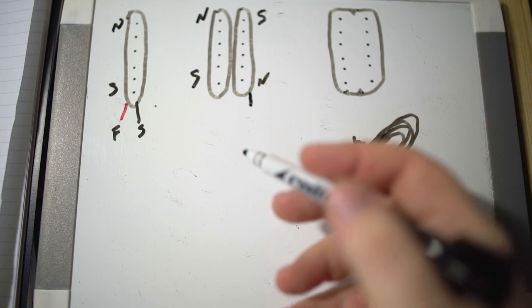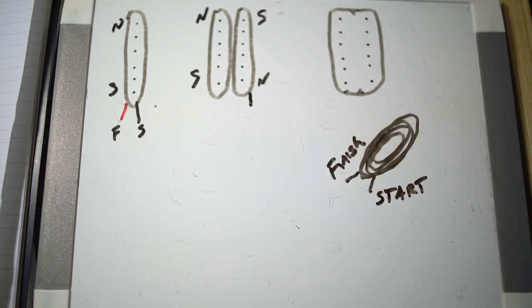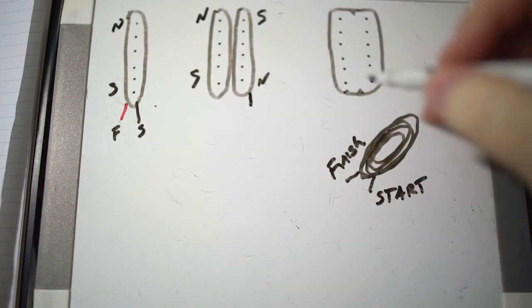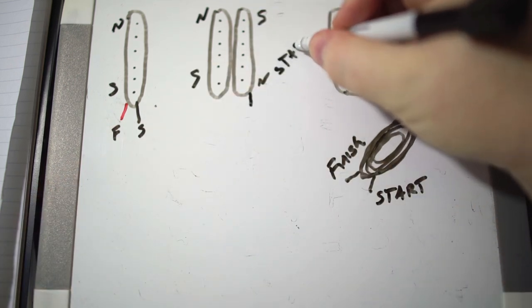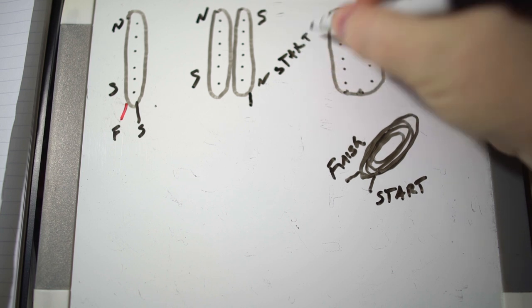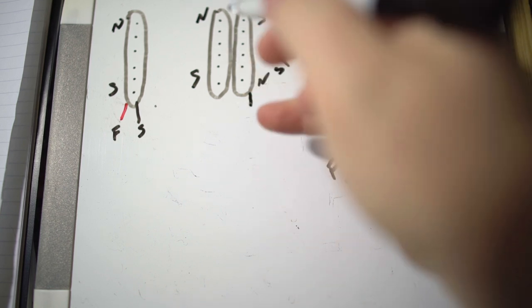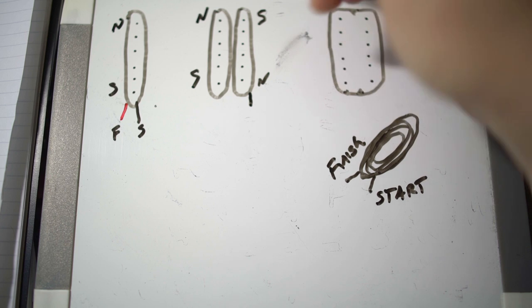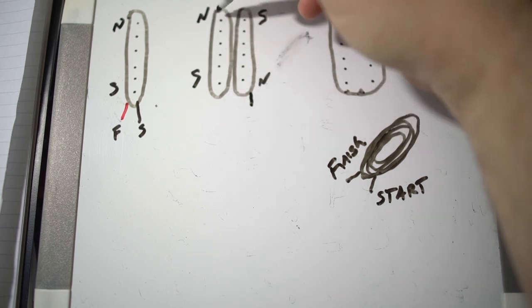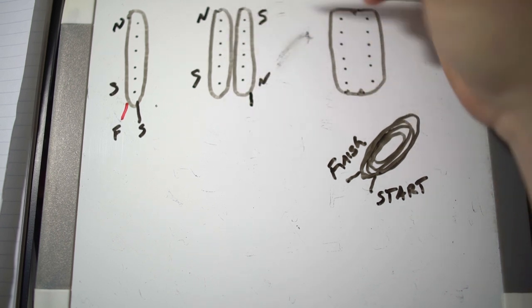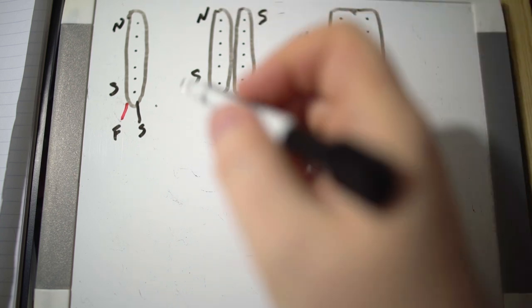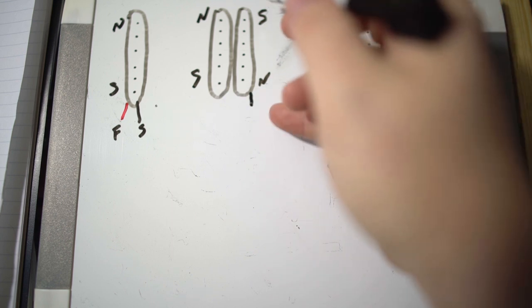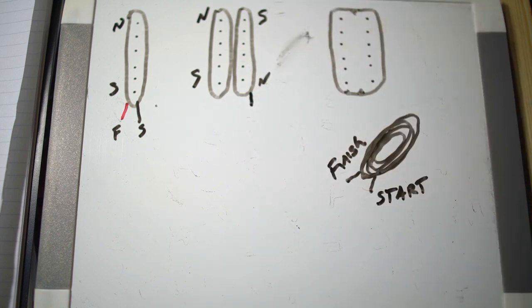When you have two separate coils of wire, you're going to have what we call a north start. You have a north start and a north finish, which actually would be on this side. This would be your north pole magnet because the north is at the top. So we'd have a north start and a north finish on one coil and a south start and a south finish on the other coil.